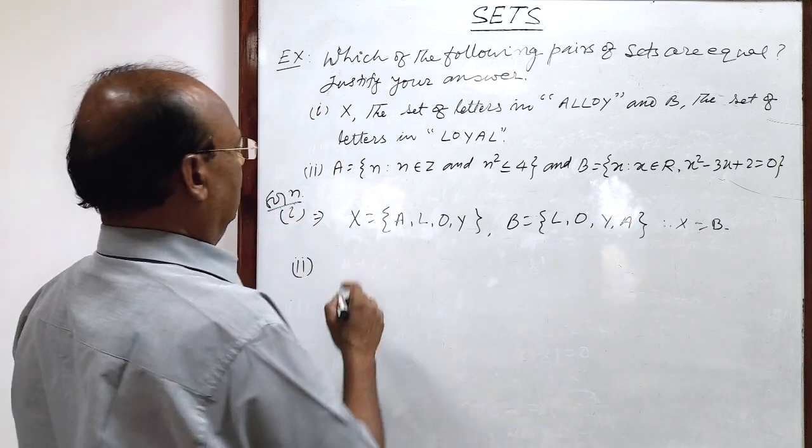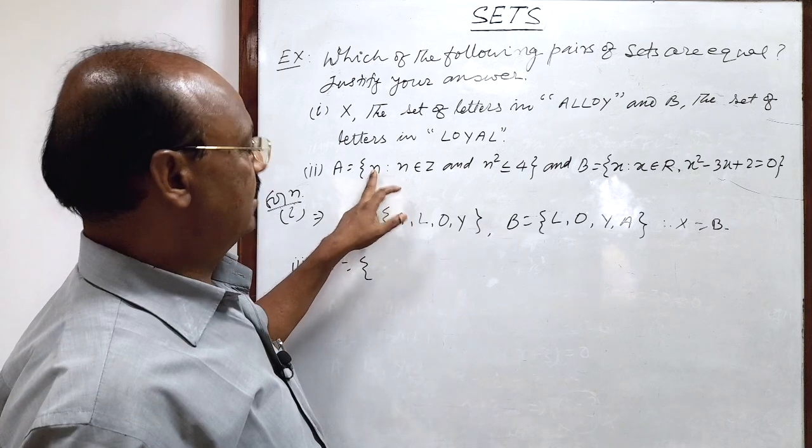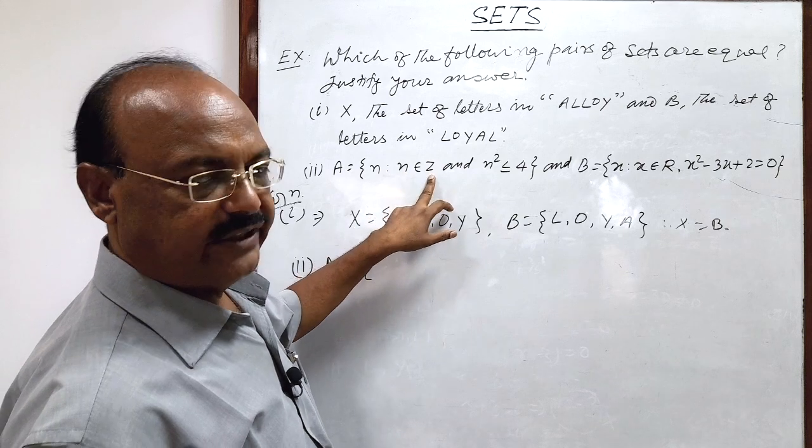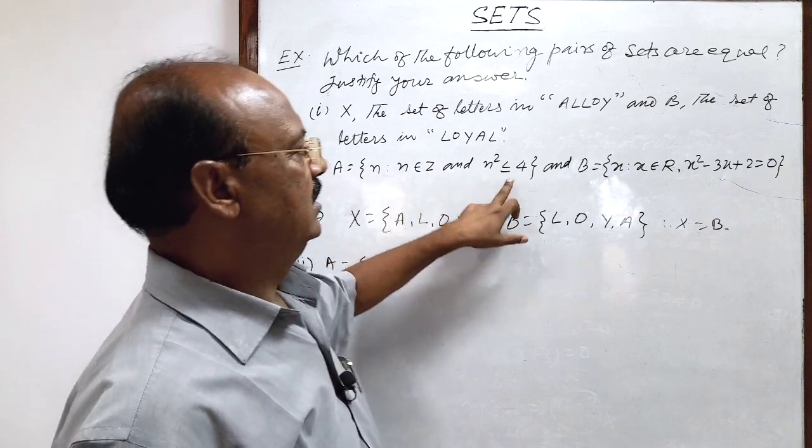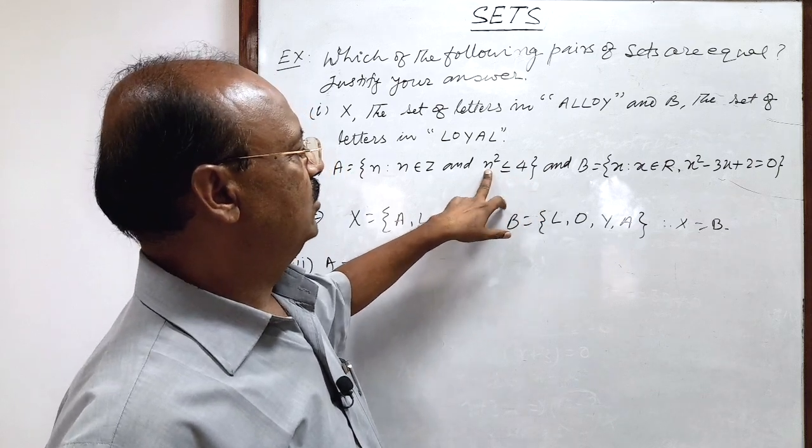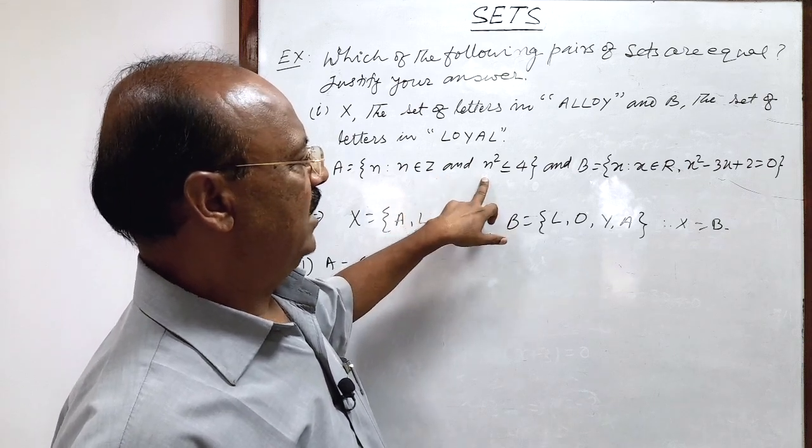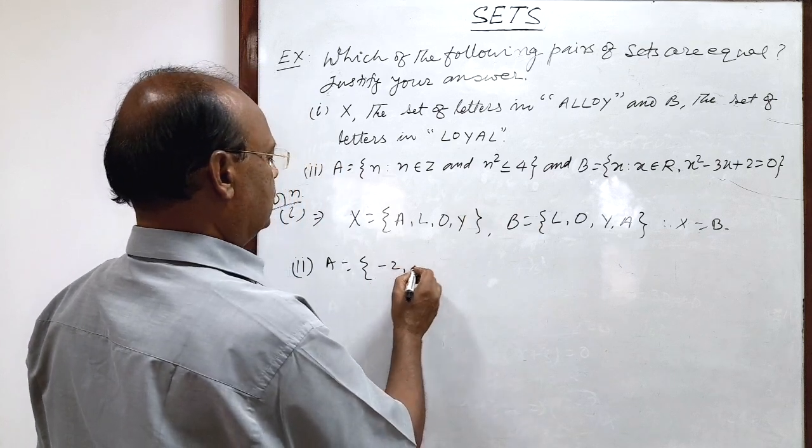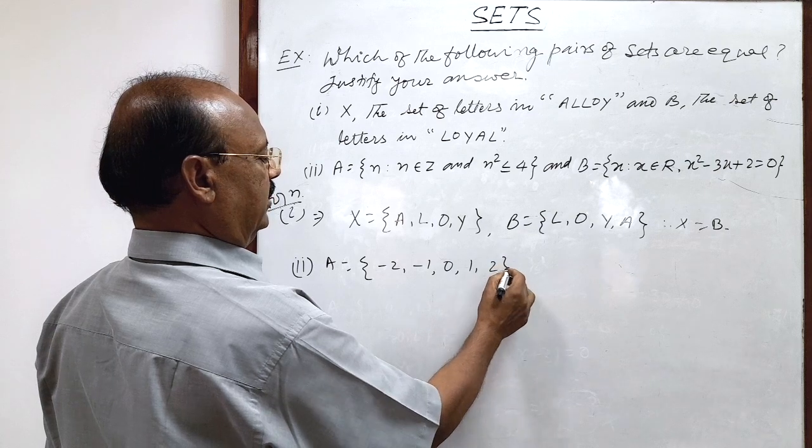Set A: elements are n from the set of integers such that n square is less than or equal to 4. So what are the values of n from the set of integers such that n square will be either less or equal to 4?